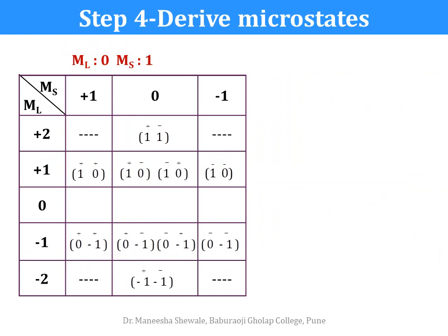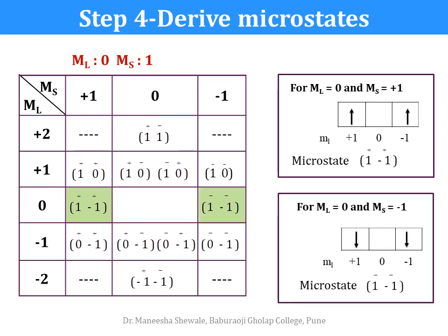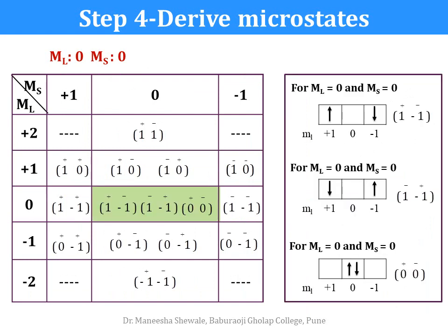For ML = 0 and MS = 0, we can write down three microstates: (1+, −1−), (1−, −1+), and (0+, 0−).